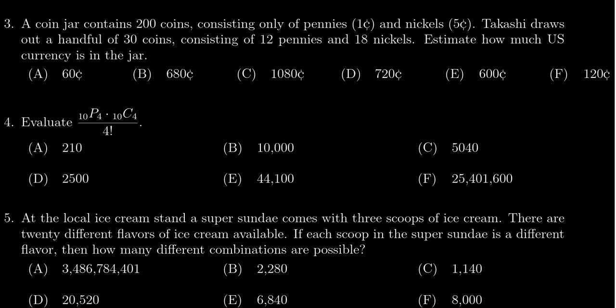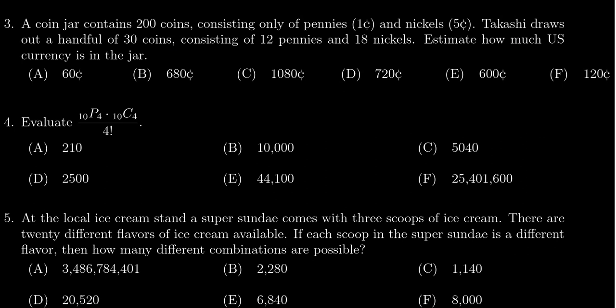We want to estimate how many pennies and how many nickels we have, so we should look at those percentages. We got 12 over 30 as our percentage of pennies, for which we can simplify that fraction. 12 and 30 are both divisible by six, so you can simplify that to be two-fifths.